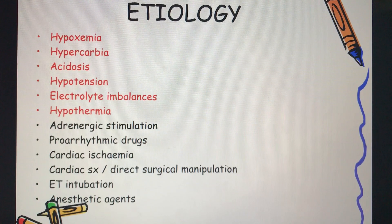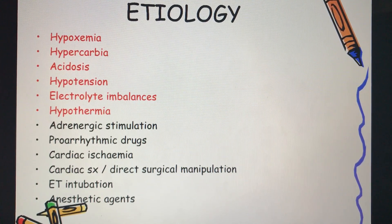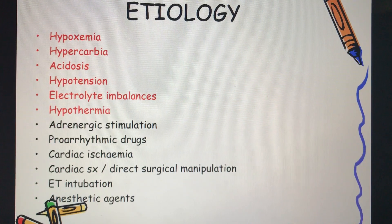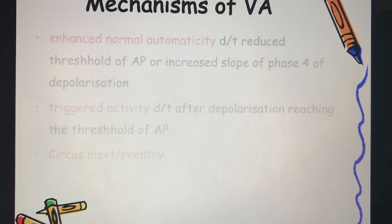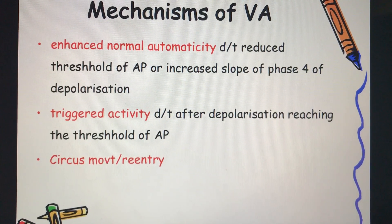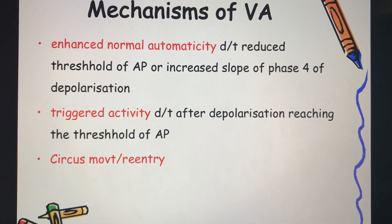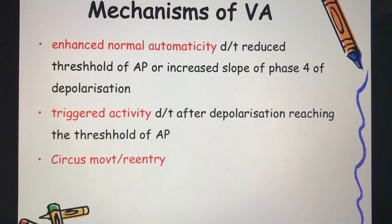Coming to etiological factors, there are multiple factors which can give rise to ventricular arrhythmias, the most important being hypoxemia, hypercarbia, acidosis, hypotension, electrolyte imbalances, and hypothermia. The mechanisms of development of ventricular arrhythmias include enhanced normal automaticity, triggered activity, and circus movement or the re-entry phenomenon.